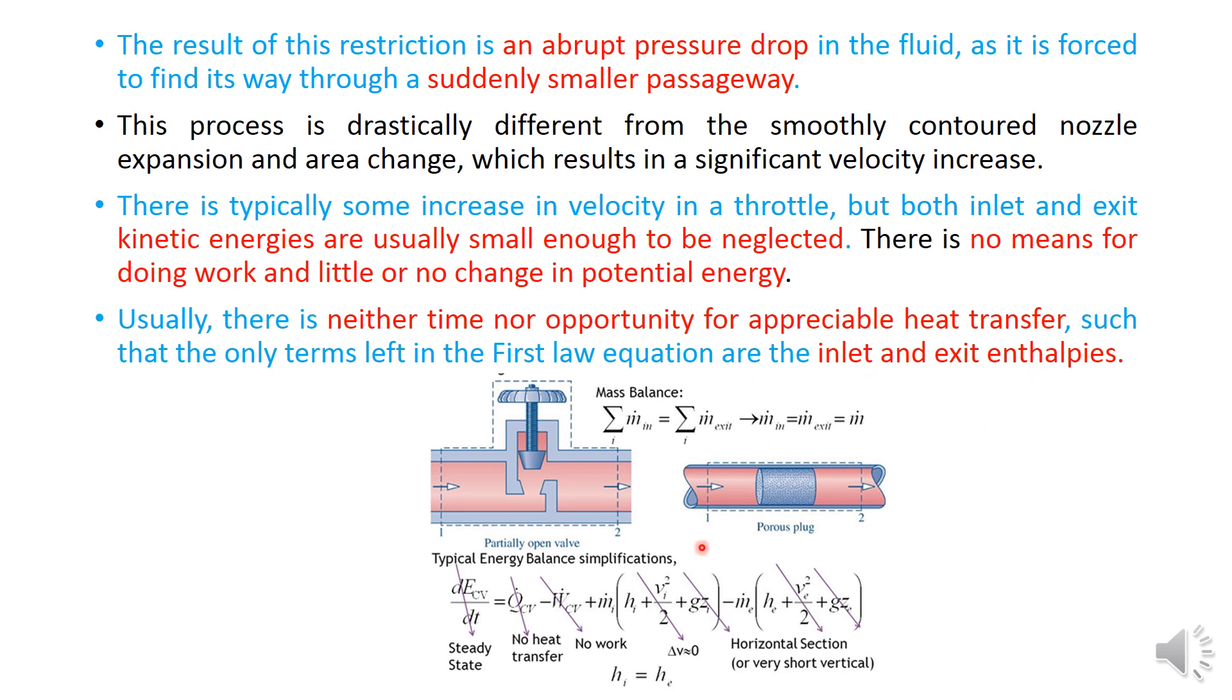So some equations I have written here. Through the mass balance you already know that mass flow rate at the inlet is equal to mass flow rate at the exit. So when we substitute all that in the first law for open system, we are left with only HI and HE. Rest all terms they cancel out.